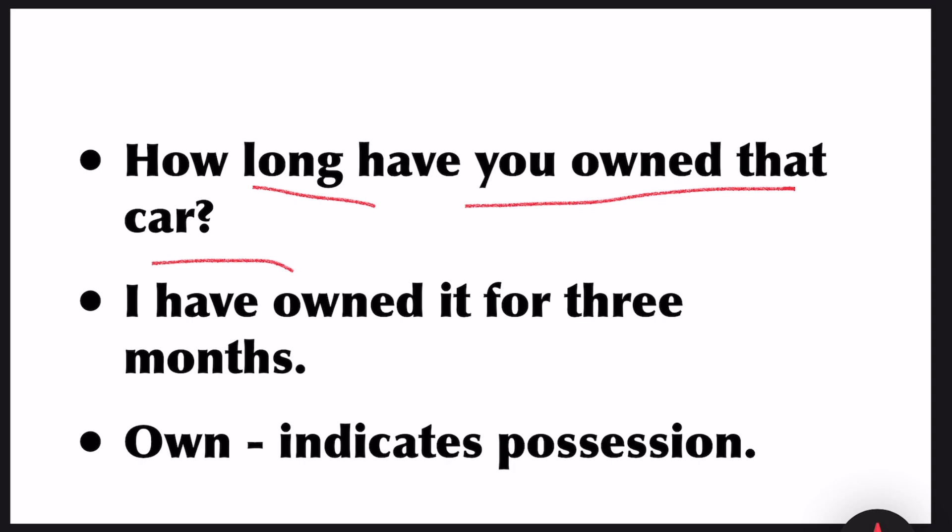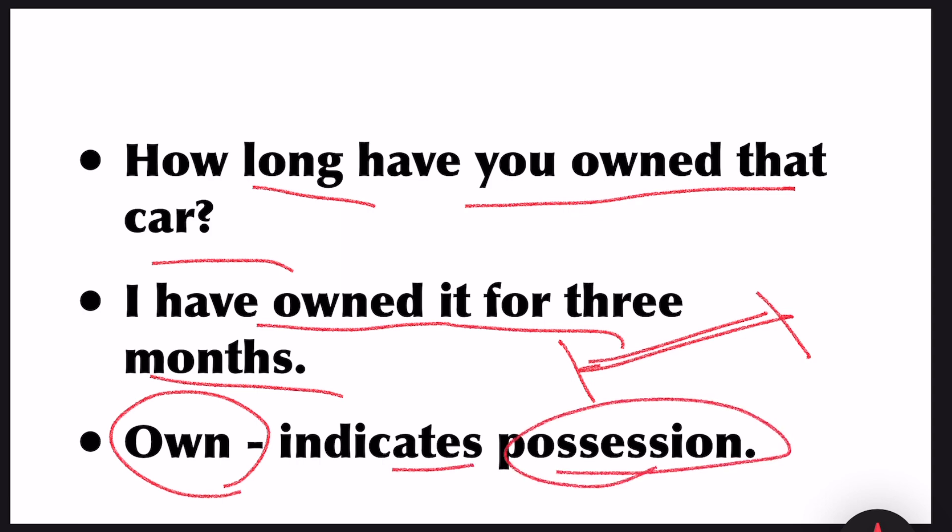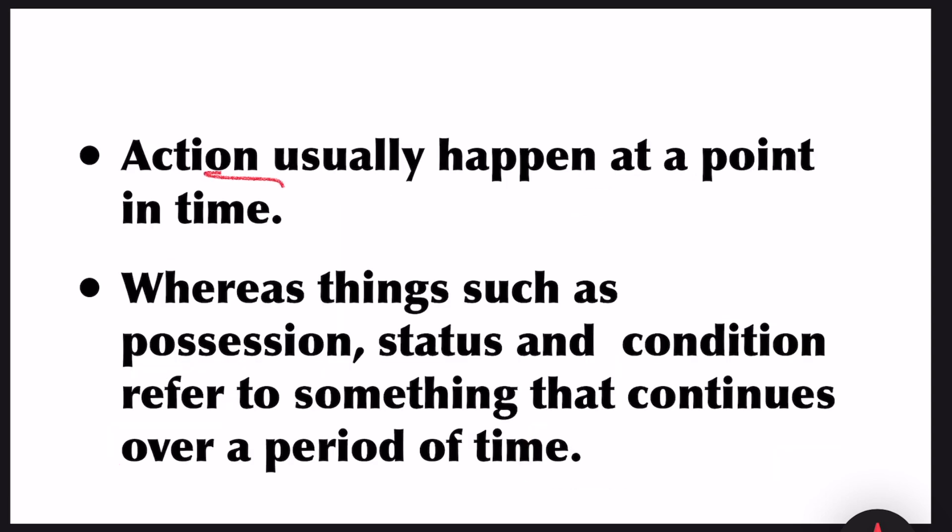How long have you owned that car? I have owned it for three months. Three months is a period of time. Here we have used own. This indicates possession. So action usually happens at a point in time, whereas things such as possession, status, and condition refer to something that continues over a period of time.